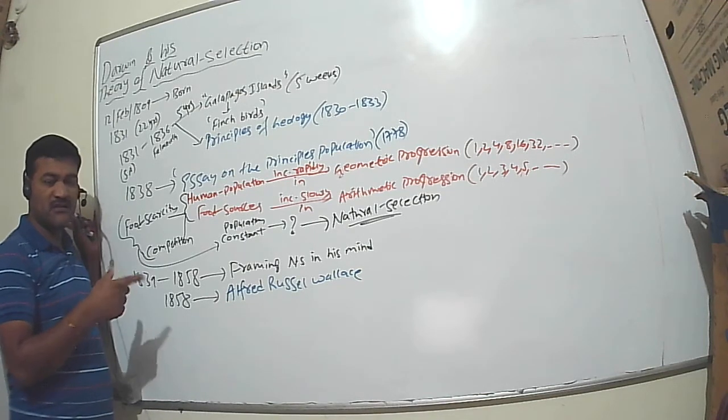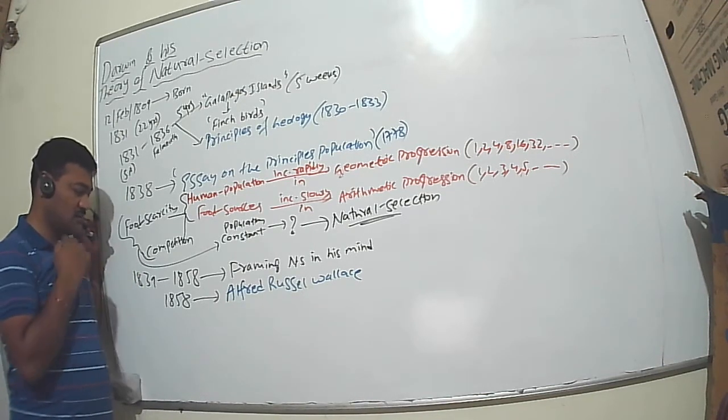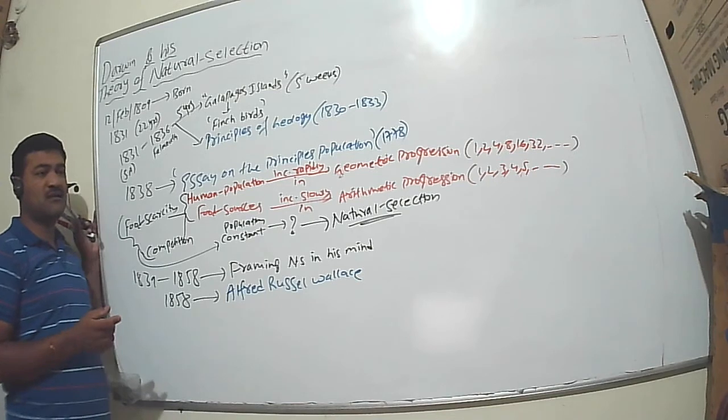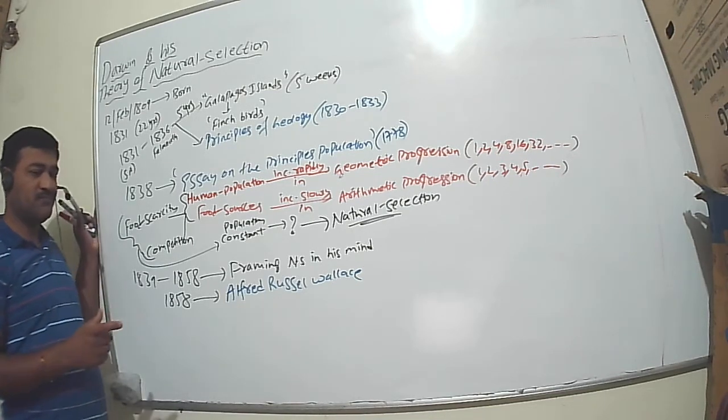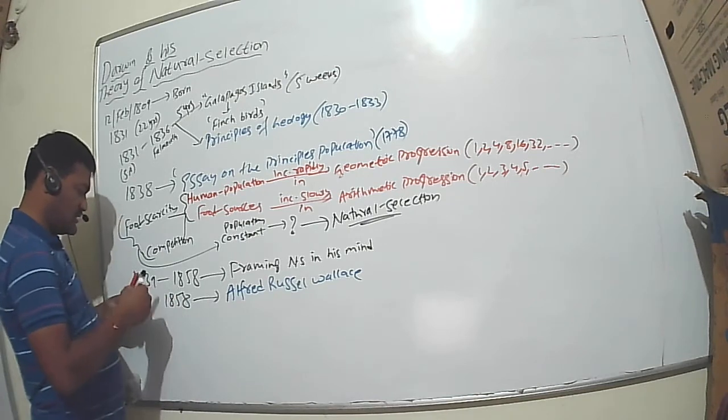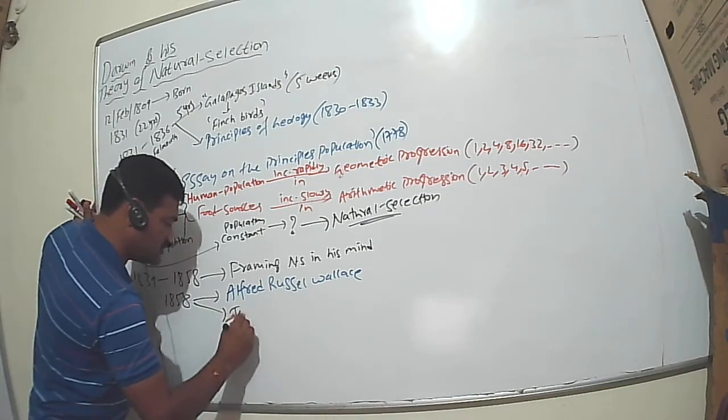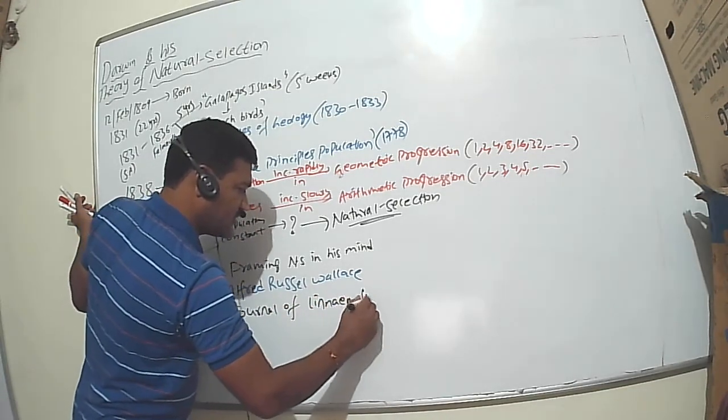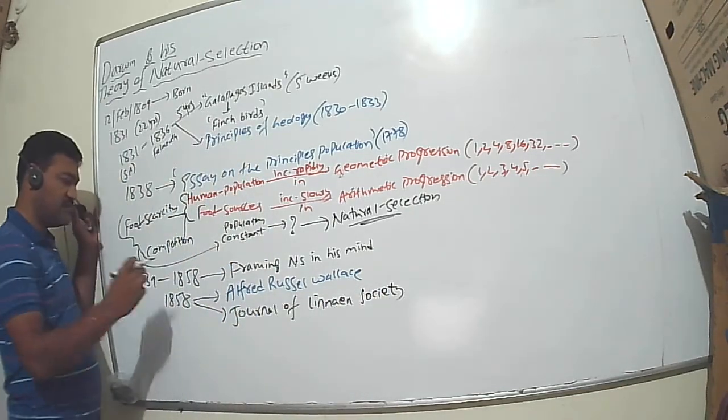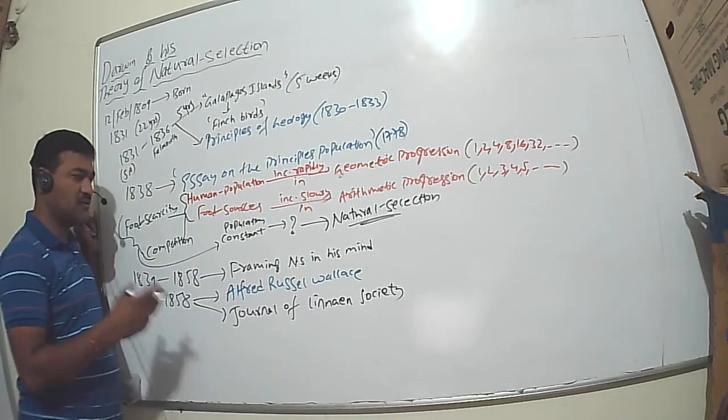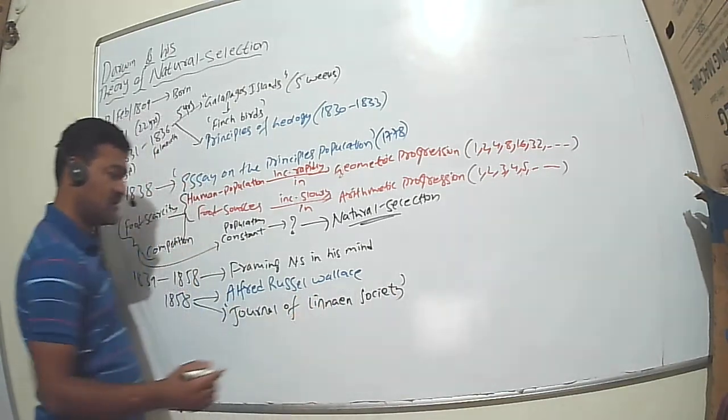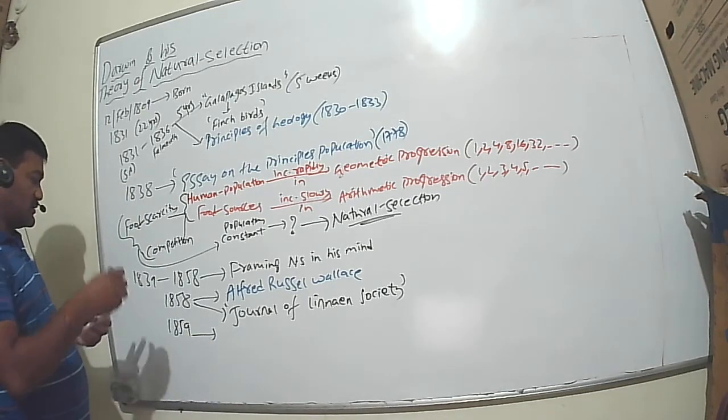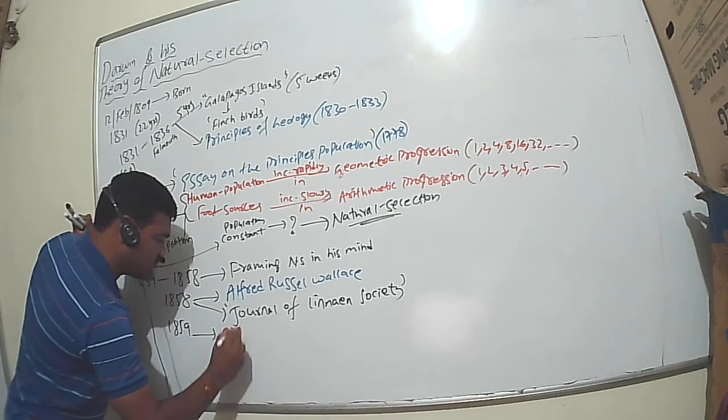Both were coincidentally coming up with the same idea of natural selection. In the same year 1858, he called Alfred Russell Wallace. They both together discussed this theory of natural selection and proposed it in the Journal of Linnaean Society. They both together published the theory of natural selection in this journal. It was only in the next year 1859 that he came up with this very famous book, The Origin of Species.